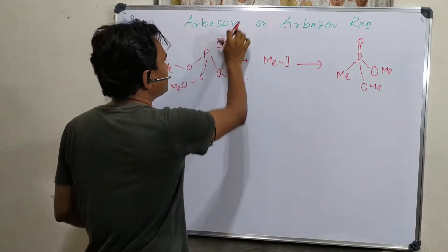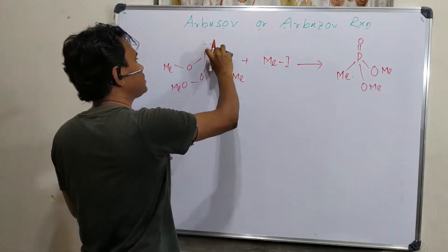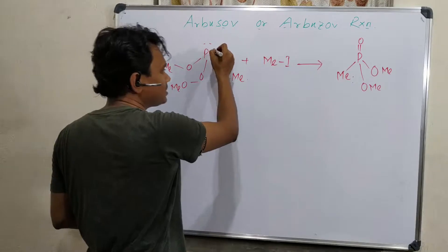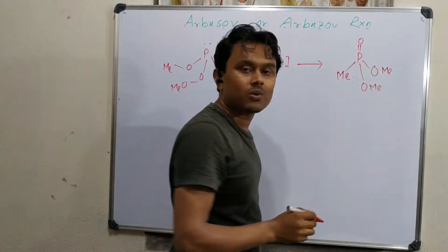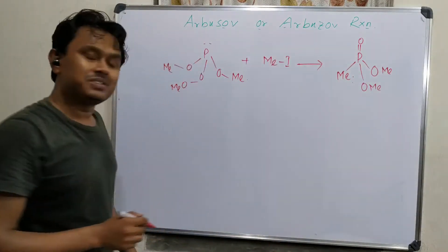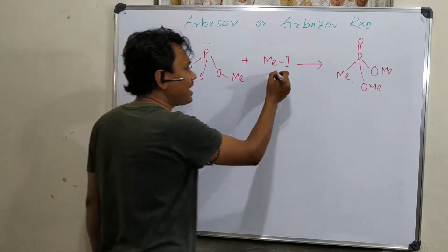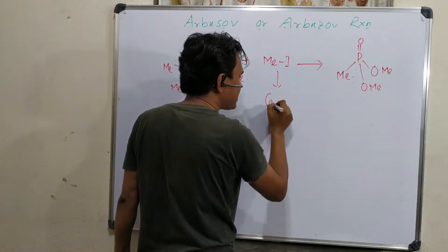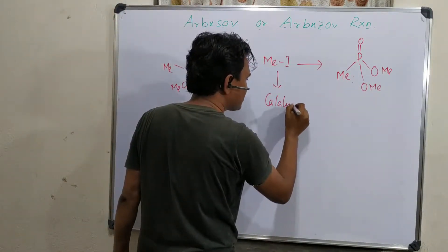Actually, it is phosphorus 3 in this way, meaning tricoordinated phosphorus converting into pentacoordinated phosphorus. The interesting thing is that methyl iodide acts as a catalyst here.